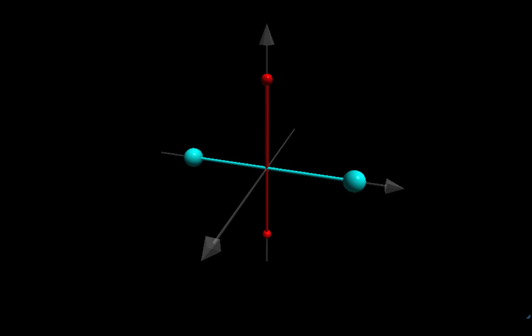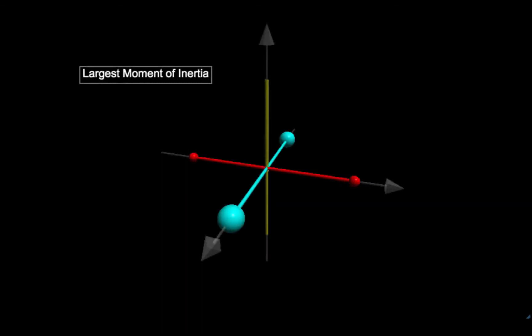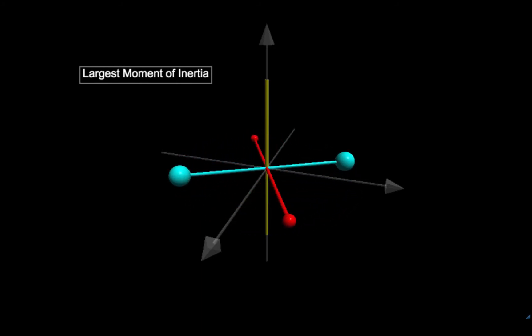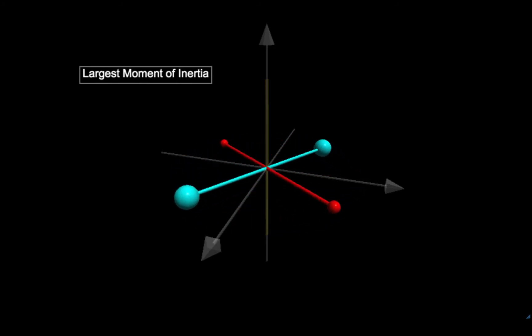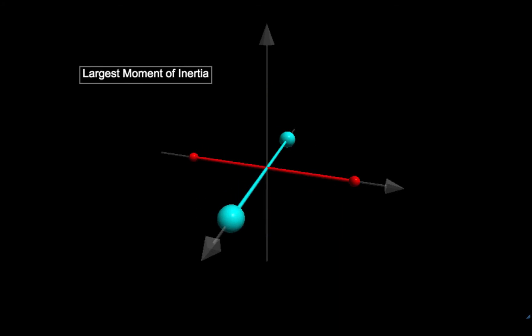This body, like all bodies, has three principal axes of rotation. When a body is rotated about one of its principal axes, the angular velocity and angular momentum point in the same direction. For this particular body, the principal axis with the largest moment of inertia is the axis perpendicular to the plane of the masses. Here we can see the body rotating about this axis, shown in yellow. This axis has the largest moment of inertia because each of the four masses is far from the axis of rotation.